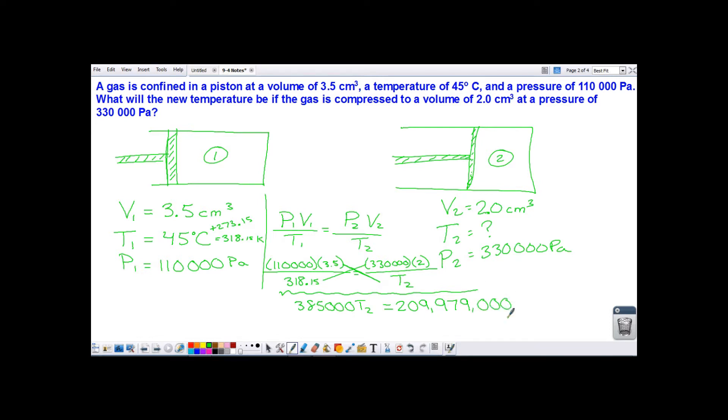And now I simply need to divide both sides by 385,000. And I get temperature 2 to be 545 and 4 tenths Kelvin.